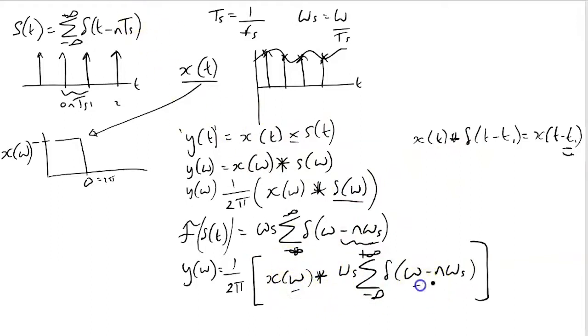We can rewrite this knowing that property. The expression series is now ω rather than t_s. So we can say y(ω) equals one over t_s, and it's going to be the sum from minus infinity to plus infinity of x(ω) minus n·ω_s.